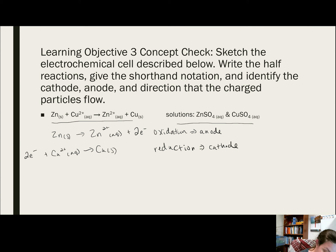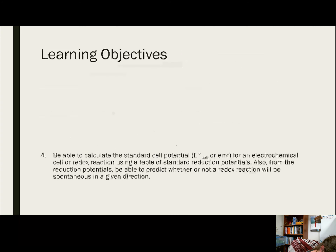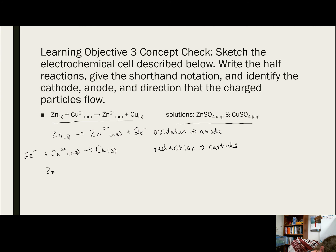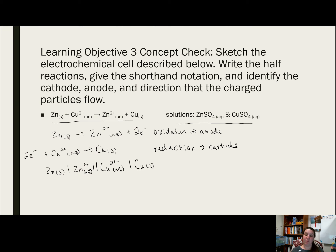We write the shorthand notation with the anode on the left and cathode on the right: zinc solid, phase boundary, Zn²⁺ aqueous, double line salt bridge, Cu²⁺ aqueous, phase boundary, copper solid. On the outsides we see our electrodes — anode on the left side, cathode on the right side.